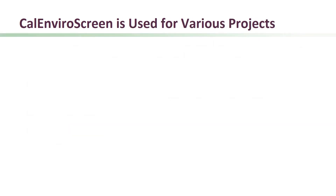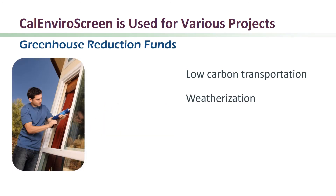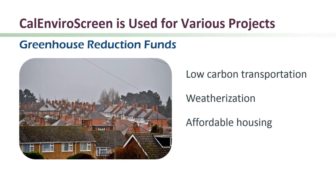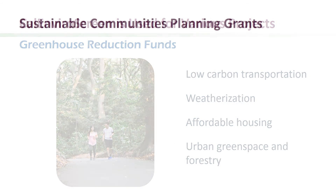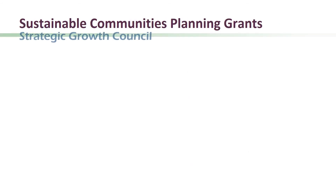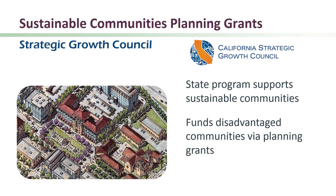CalEnviroScreen is being used for a variety of other programs as well. Greenhouse gas reduction funds are being used for low-carbon transportation projects, weatherization projects, affordable housing projects, and urban green space and forestry. For example, the Strategic Growth Council, a state government program that supports sustainable communities, provides funds to CalEnviroScreen disadvantaged communities through planning grants.